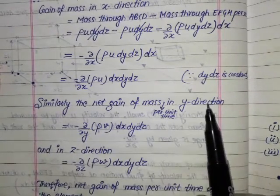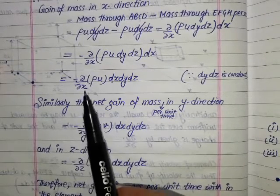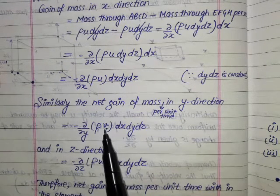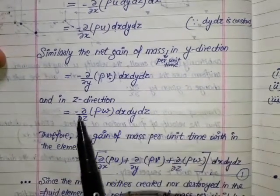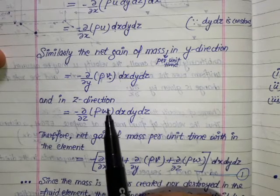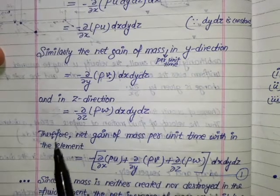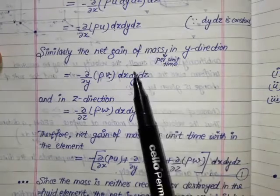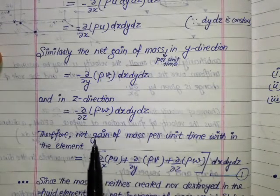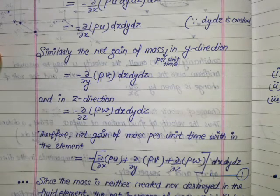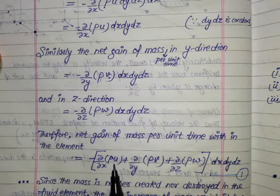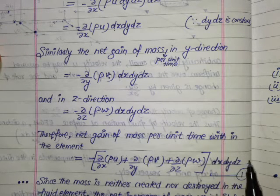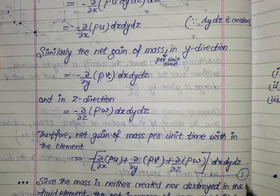Similarly, the net gain of mass per unit time in the y direction is −(∂/∂y)(ρ·v)·dx·dy·dz, where v is the velocity component in y. In the z direction it is −(∂/∂z)(ρ·w)·dx·dy·dz, where w is the velocity component in z. Therefore, the total net gain of mass per unit time within the element is −[(∂(ρu)/∂x) + (∂(ρv)/∂y) + (∂(ρw)/∂z)]·dx·dy·dz. This is equation 1.